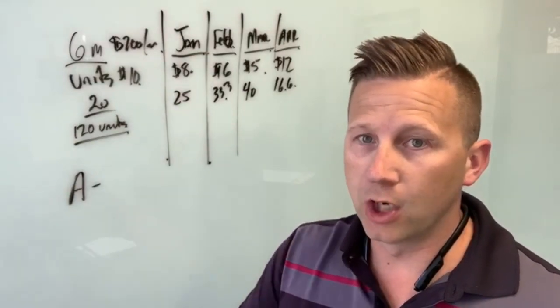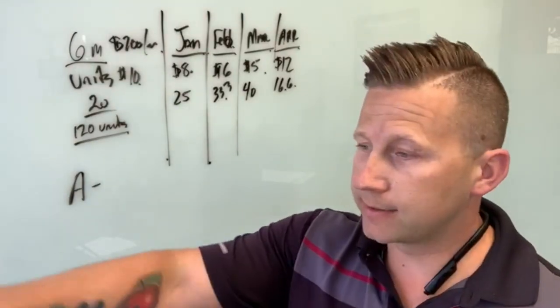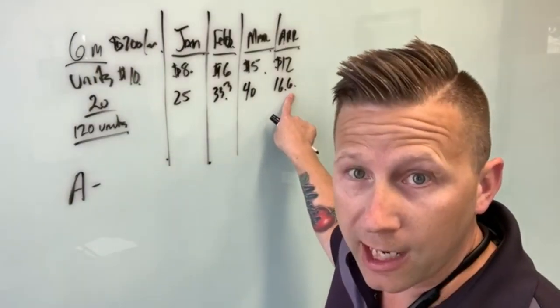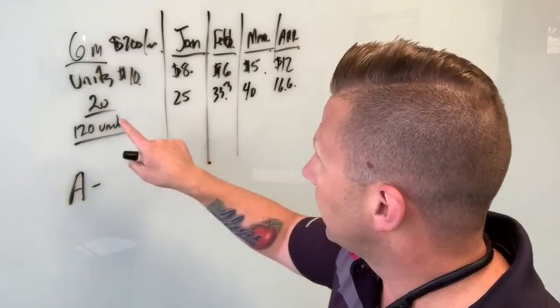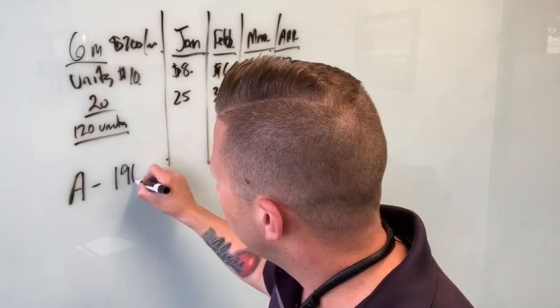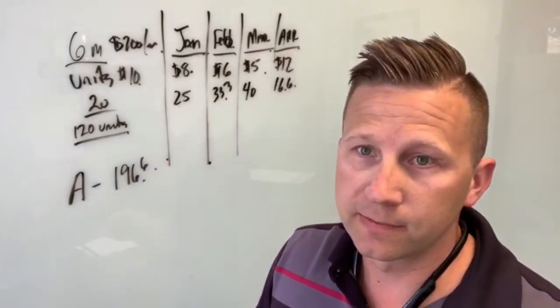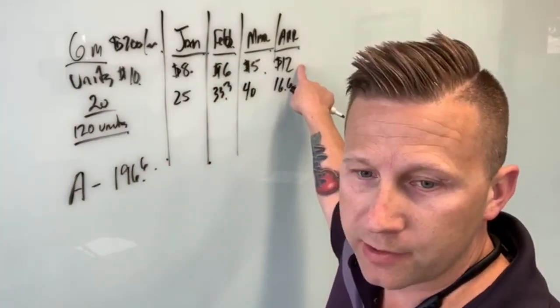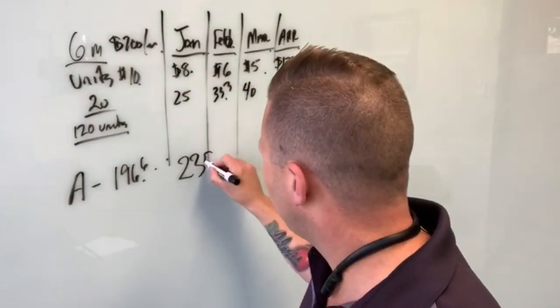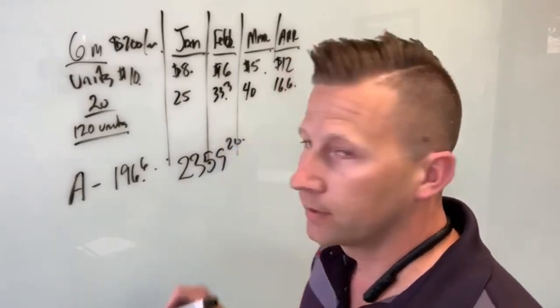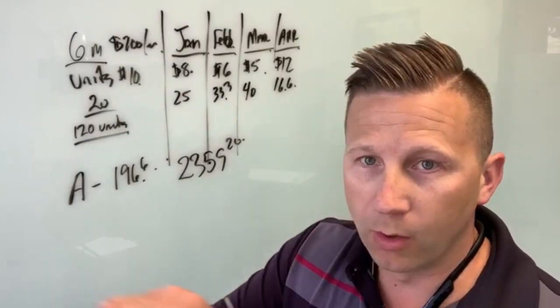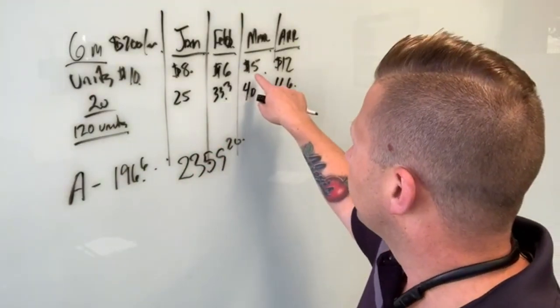Scenario A: no adversity, stayed 10 bucks forever, then got to April and jumped to 12 bucks. If we add up the units that you would have been able to purchase, you would have purchased 196.6 units. Now the unit price would be 12 dollars, so you would be at $2,359.20. You would have put in $2,000, so you're up $359.20.